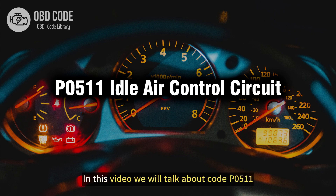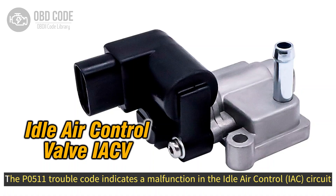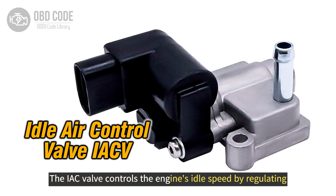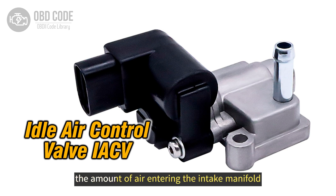Welcome. In this video we will talk about code P0511, its symptoms, causes and possible solutions. The P0511 trouble code indicates a malfunction in the idle air control (IAC) circuit. The IAC valve controls the engine's idle speed by regulating the amount of air entering the intake manifold.